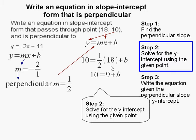I simplify: 1/2 of 18 is 9. Then I isolate b by subtracting 9 on both sides, and I get b equal to 1. Now I have my slope and my y-intercept.